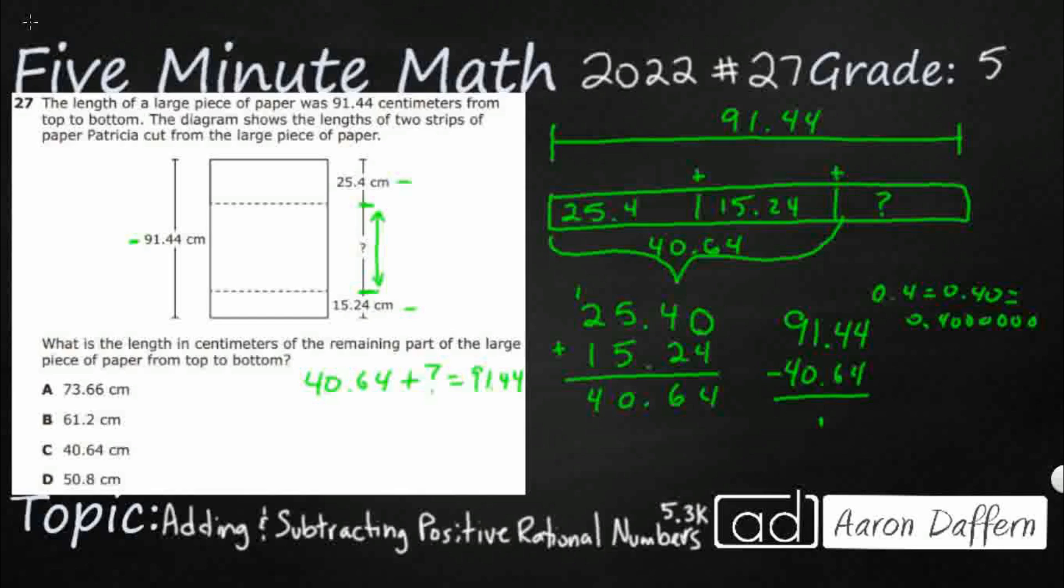So we're going to subtract now instead of add. Make sure we've got a different operation in our brain. 4 minus 4 is 0. We're going to need to regroup here. So that is going to be 8. That's 0. All right, so 50.80.